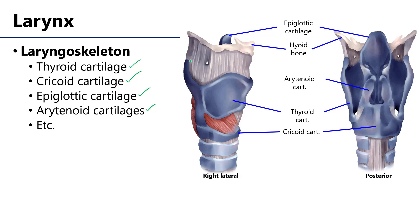I'm outlining now the thyroid cartilage. That thyroid cartilage is a very prominent anterolateral cartilage of the larynx. Looking at this posterior view, we see that the thyroid cartilages are incomplete posteriorly. The cricoid cartilage, which I am circling now, is the only portion of the laryngoskeleton which is complete 360 degrees around the airway.